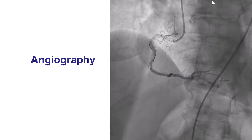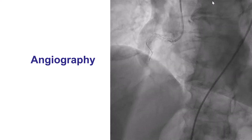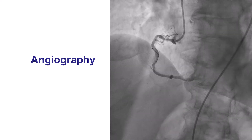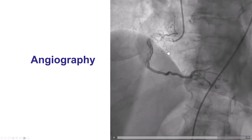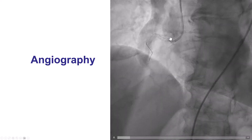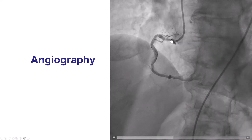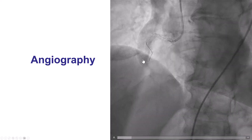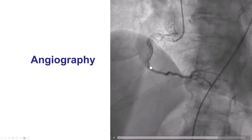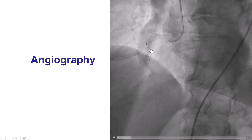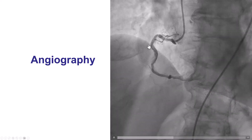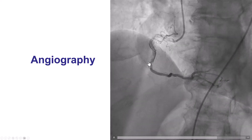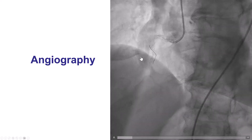This is the angiogram when she presented. We still have some residual aortocoronary dissection on the proximal right coronary artery, and there is diffuse disease with calcification in the mid-right coronary artery.